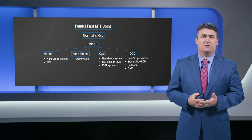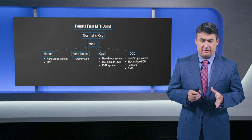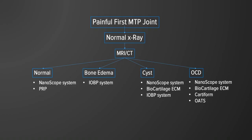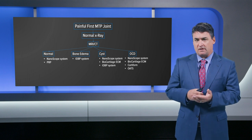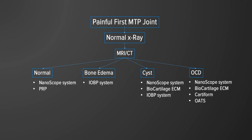For a patient with a painful first MTP joint but a relatively normal x-ray, we get an MRI or CT scan. If that looks normal, we consider a nanoscope and a PRP injection if the patient still has a lot of pain. If MRI shows bone edema, interosseous bioplasty is a nice option. If there's a cyst, we use the nanoscope to check for cartilage violation — if so, biocartilage can be applied open or arthroscopically. For an osteochondral defect, we start with nanoscope or minimally invasive, moving to open if needed with biocartilage, Cartiform for larger lesions, or OATS for revision cases or very large defects.